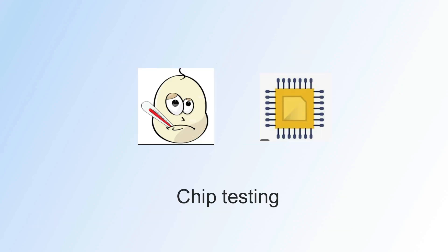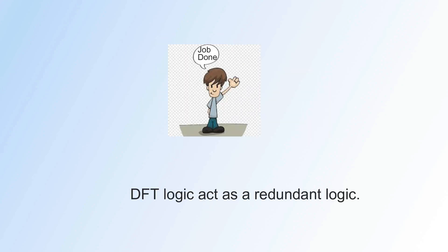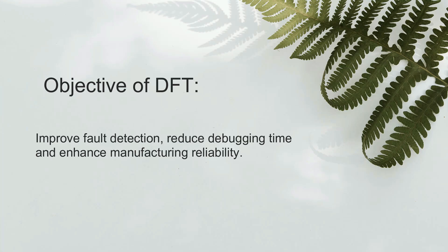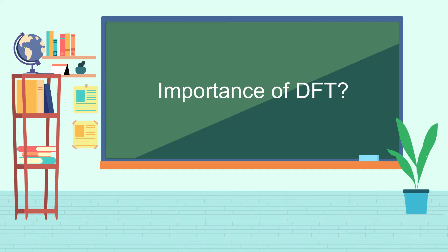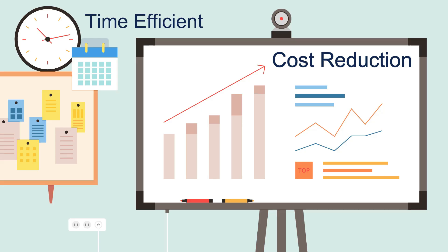Once a chip is tested and found defect-free, DFT logic acts as redundant logic on the chip. The objectives of DFT: it improves fault detection and helps in reducing debugging time — we'll discuss how in upcoming videos. Importance of DFT — quality assurance: it ensures the quality of a chip is best. Time efficiency: DFT helps in debugging any issue on a chip very quickly.